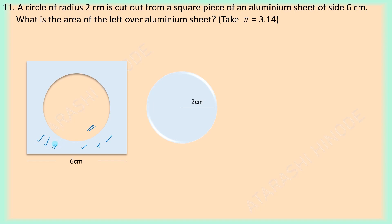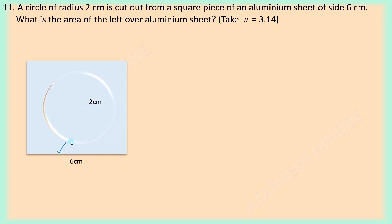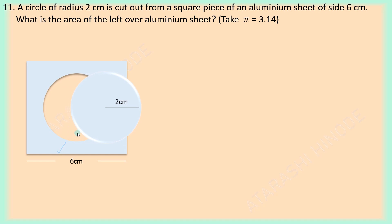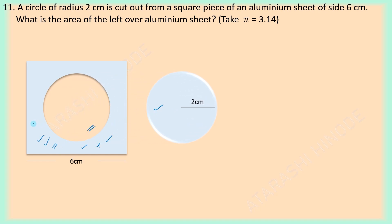That is: from the area of this square, when we subtract the area of this circle, we get the area of this sheet.